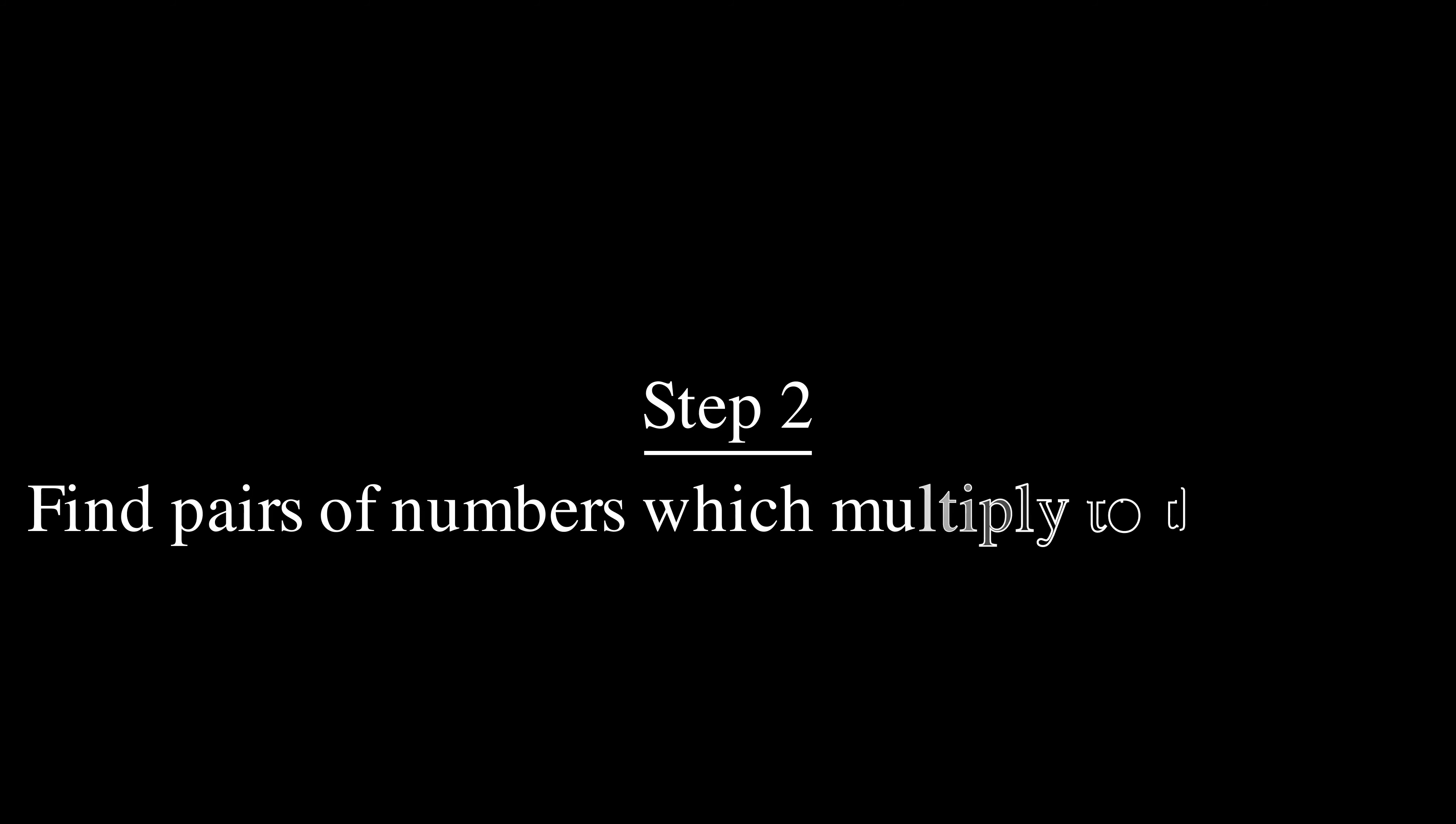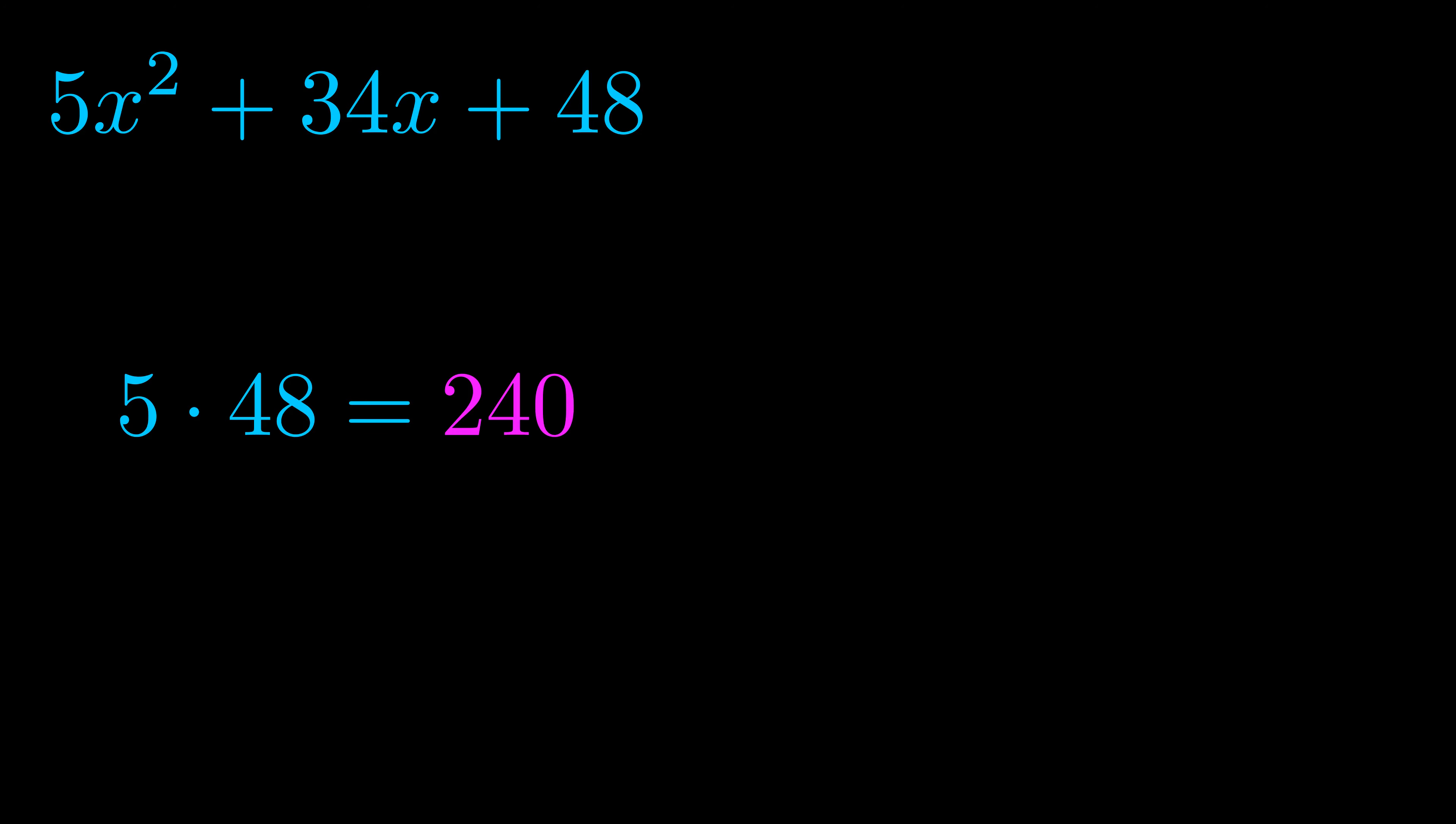Step two is to try to find all of the pairs which multiply to this number. Now it turns out you don't really need to find all of them, but go ahead and write down as many numbers as you can that multiply to the magenta value for now. Pause the video and resume when you're ready to continue.